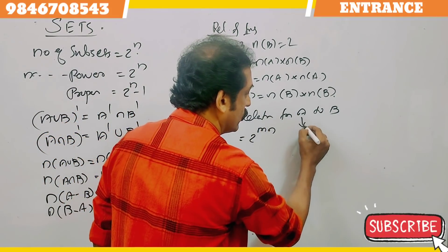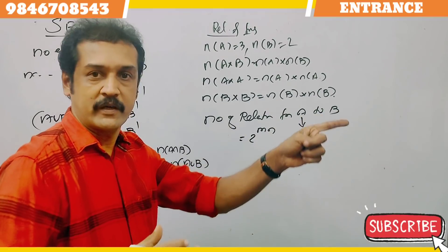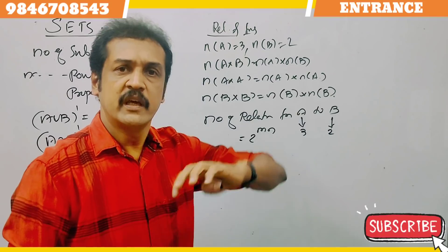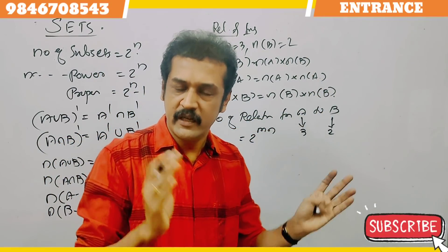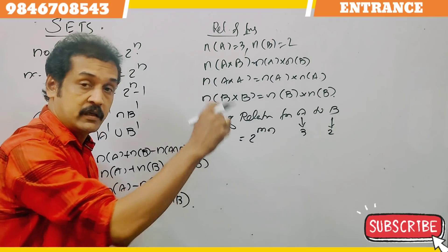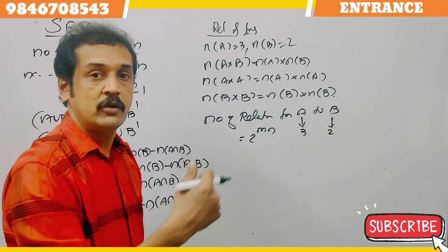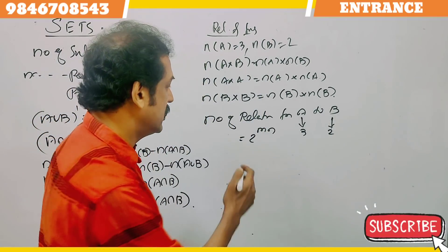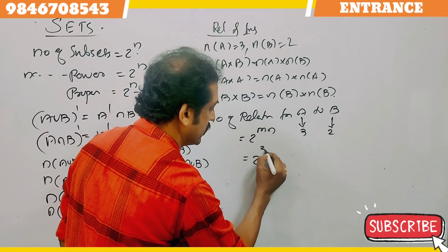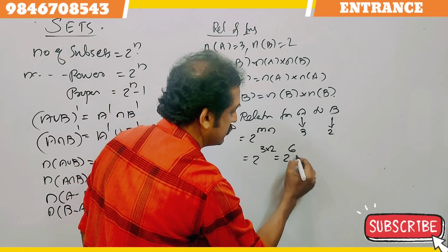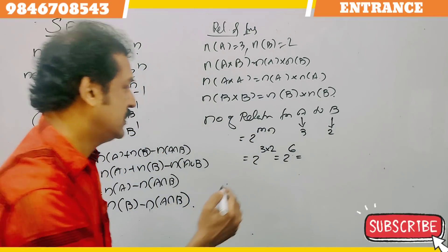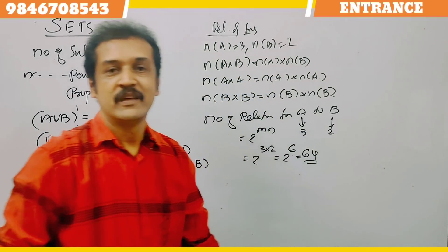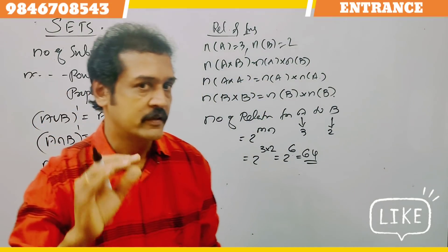Now we have A with three elements and B with two elements. The number of relations from A to B is 2 raised to n(A×B), which is 2 raised to 6, and 2 raised to 6 is 64. Okay, that's all. This is easy and simple.